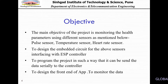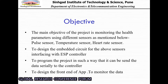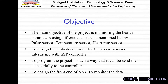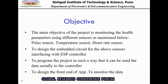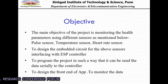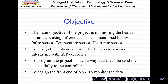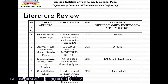The main objective of this project is to monitor health parameters using different sensors, such as a wall sensor, temperature sensor LM35, and heart rate sensor. The main objective was to design an embedded circuit for interfacing the above sensors with the ESP controller, and to program the project such that data can be sent serially to the controller. I now forward the mic to my colleague Mayur Puri.